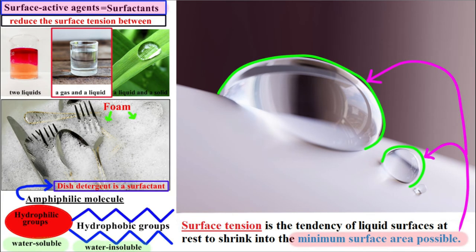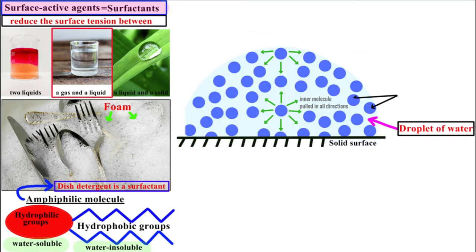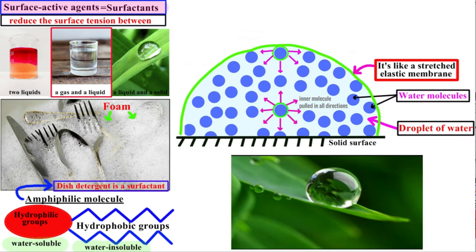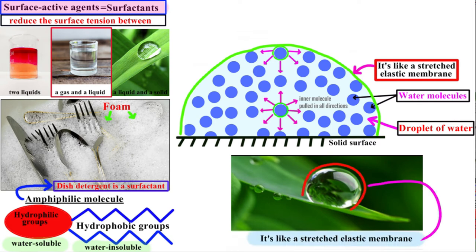Here you can see a droplet of water on a solid surface — now the same droplet in schematic form. Water molecules are in blue. The inner molecules are pulled in all directions by other molecules, but surface molecules are pulled inward because there are no water molecules in the air to do the pulling. That's why the water droplet shrinks into the minimum surface area possible. Surface tension is a property of a liquid surface displayed by its acting as if it were a stretched elastic membrane.